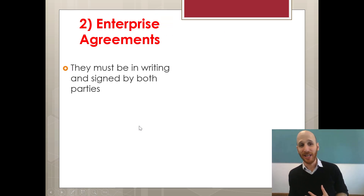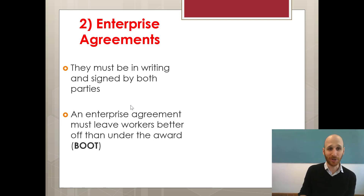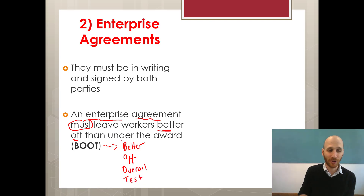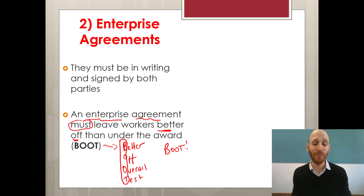Enterprise agreements have to be in writing and signed by both parties, and an enterprise agreement must leave workers better off than under the award. There's a test that is applied called the Better Off Overall Test, also known as BOOT. So if a worker signs an enterprise agreement, it must leave them better off than if they were still under the award, which sets the minimum. Remember the BOOT — the Better Off Overall Test.